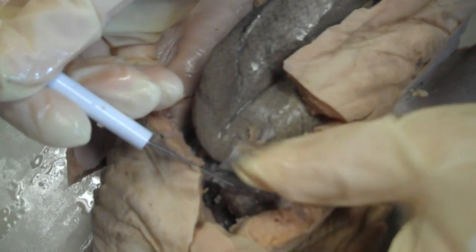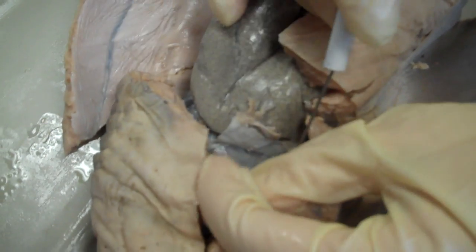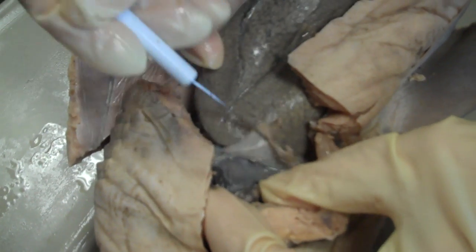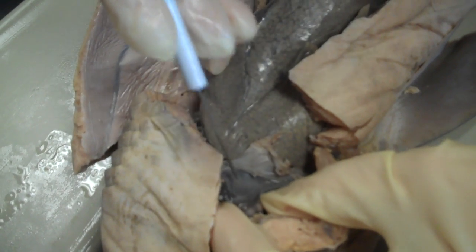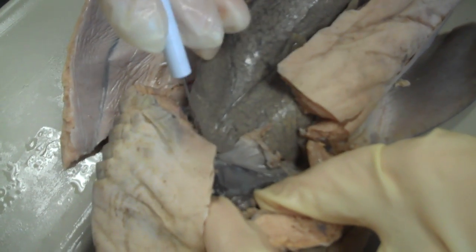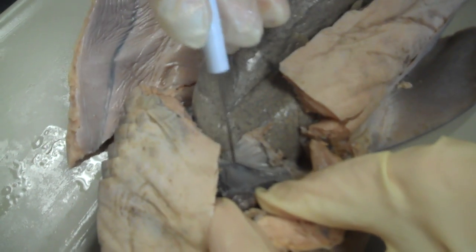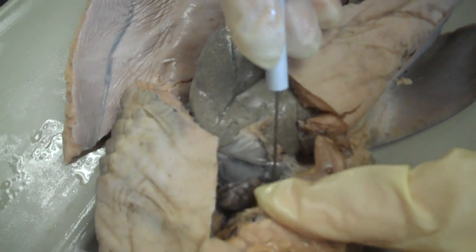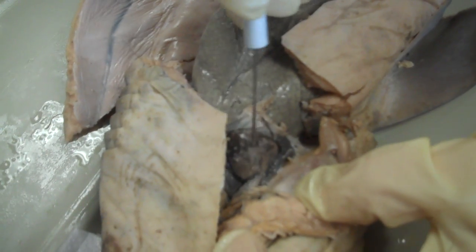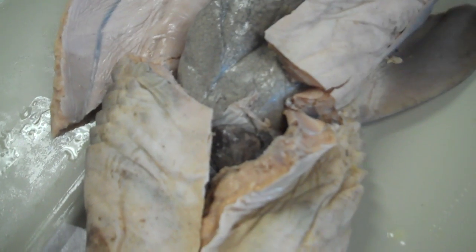If you lift up the ventricle underneath, you find this triangular region here. This is the sinus venosus. So all of this deoxygenated blood from the body pulls in the sinus venosus. That leads to the atrium, atrium to the ventricle, and then ventricle to the conus arteriosus.